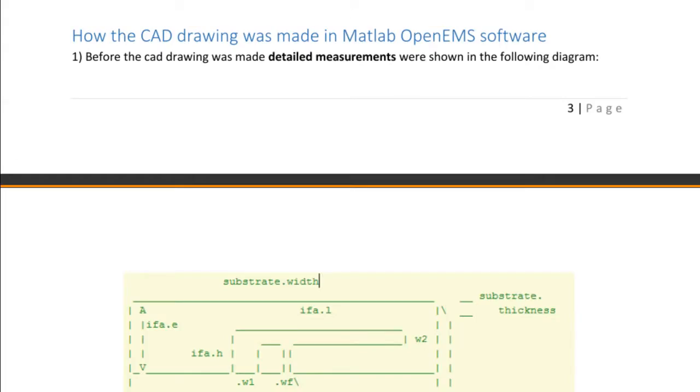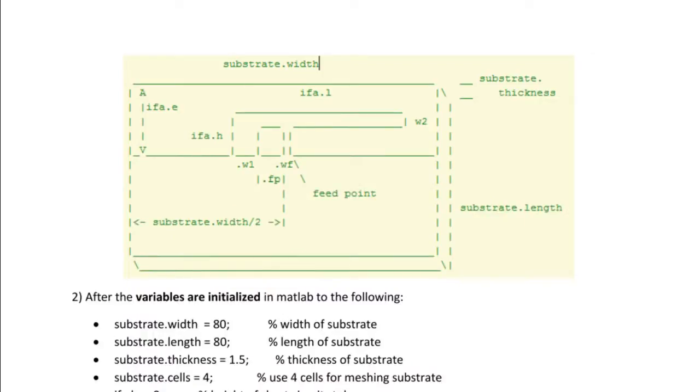Now we are going to talk about one of the most important parts about the OpenEMS software. We are going to talk about how the CAD drawing was made in MATLAB. And to get an idea of what the measurements would be for the CAD drawing, we had a little diagram here. We have the substrate width, the thickness of the substrate, what the F antenna is going to look like, and different widths and sizes that we initialized at the bottom right here.